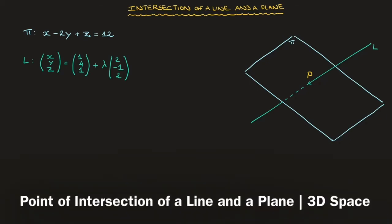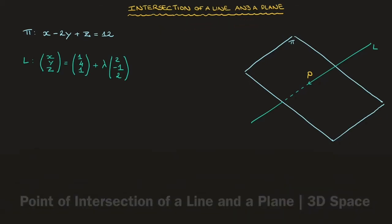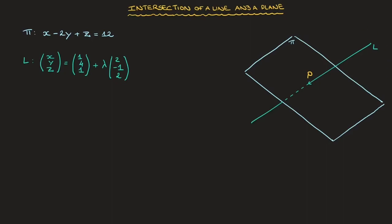Let's learn how to find the point of intersection of a line and a plane. On the right-hand side of the screen here, we can see that I've drawn a plane, which I've called pi, as well as a line, which I've called L, and that passes through the plane. What we're about to learn is how to find the coordinates of the point P at which the line passes through, or intersects, the plane.